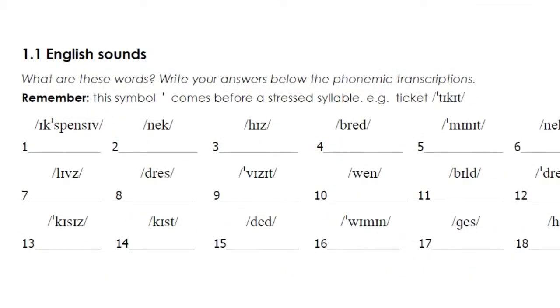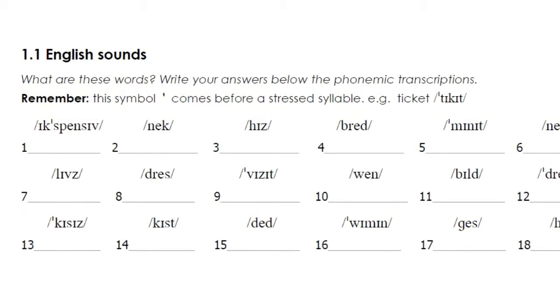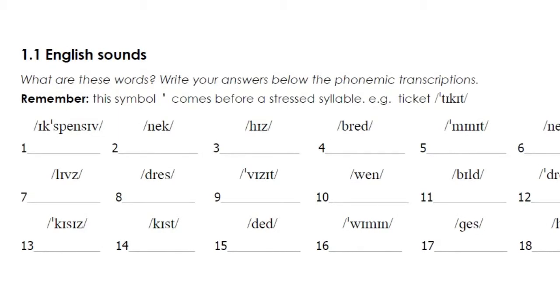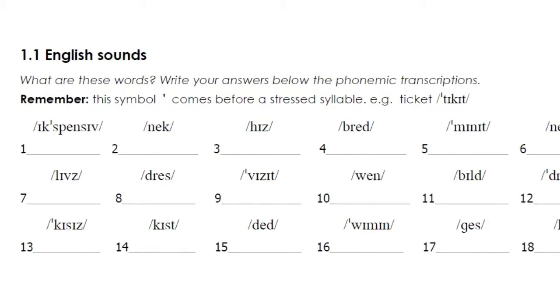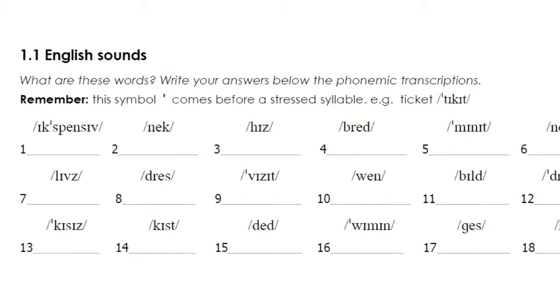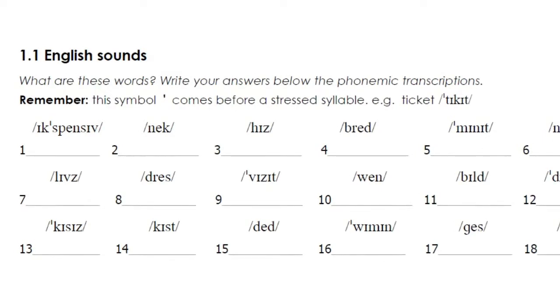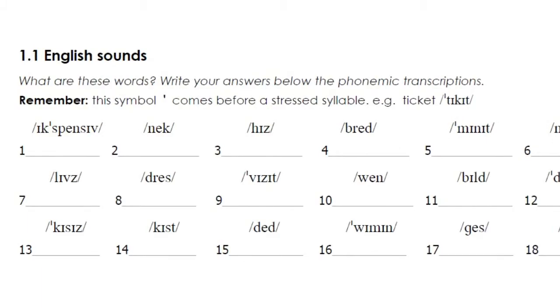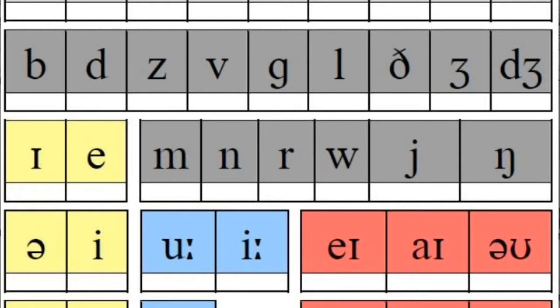The first exercise in each pronunciation lesson is deciphering phonetic spellings. The words in these exercises only contain the phonemes introduced in the lesson, plus any of those previously introduced, so the one for the first lesson looks like this. Once the students know what to expect from the pronunciation lessons, they will become much easier to teach, and as the phonemic symbols are gradually introduced, they will provide more scope for teaching. At the beginning of each lesson, go over the symbols which were introduced in the previous lesson by pointing at them and getting students to produce the sounds.